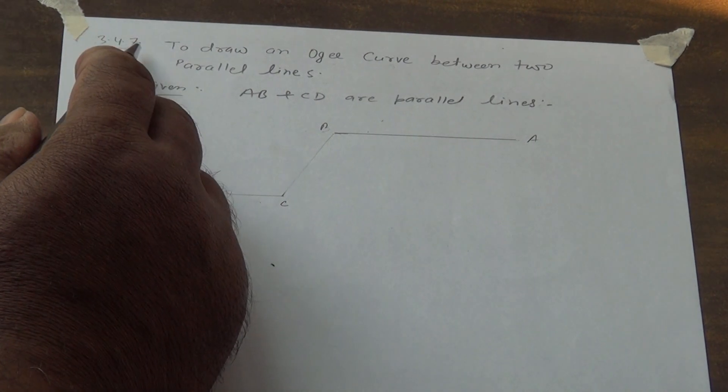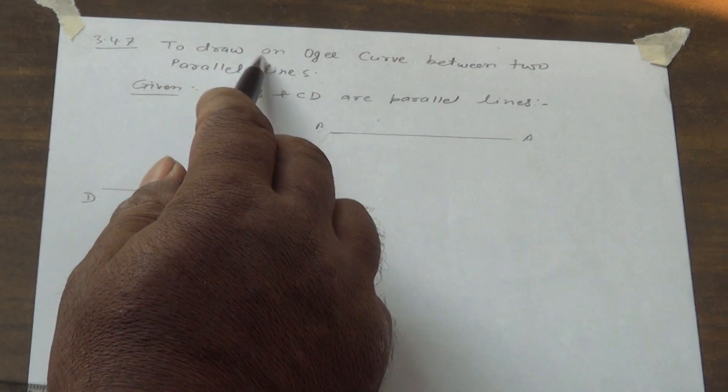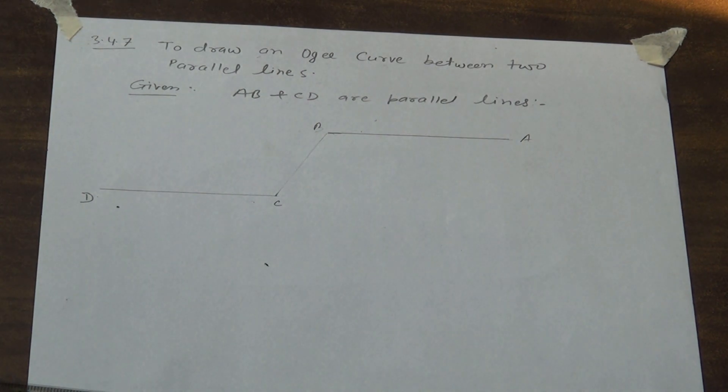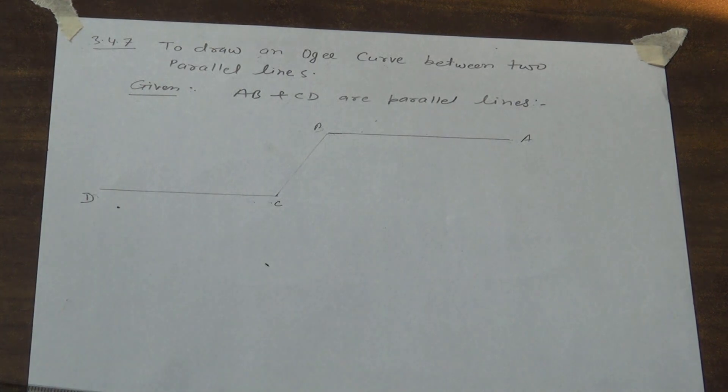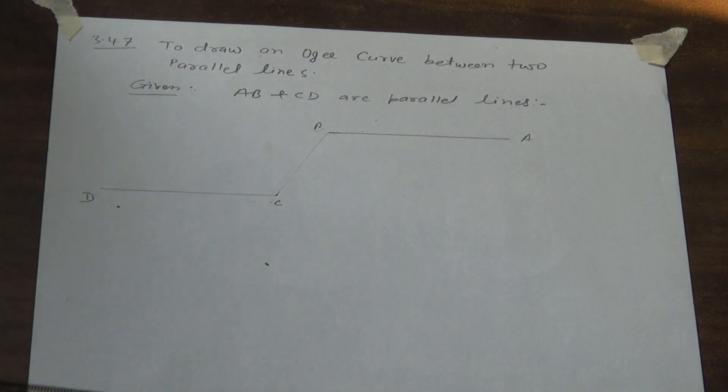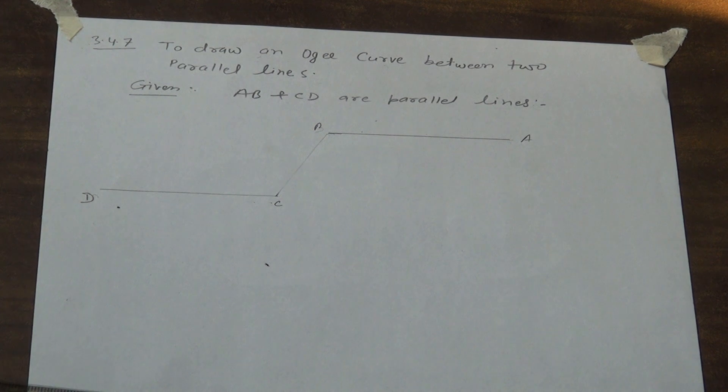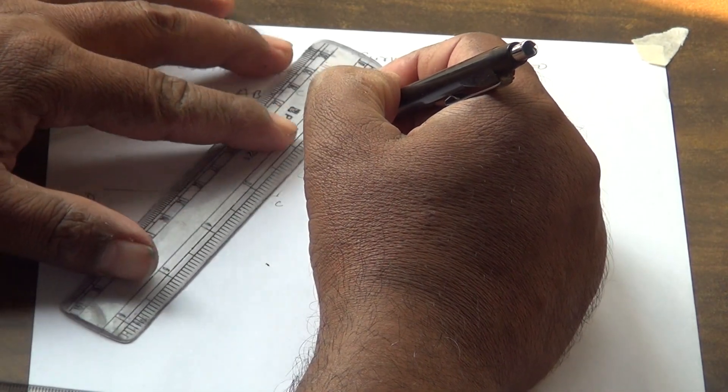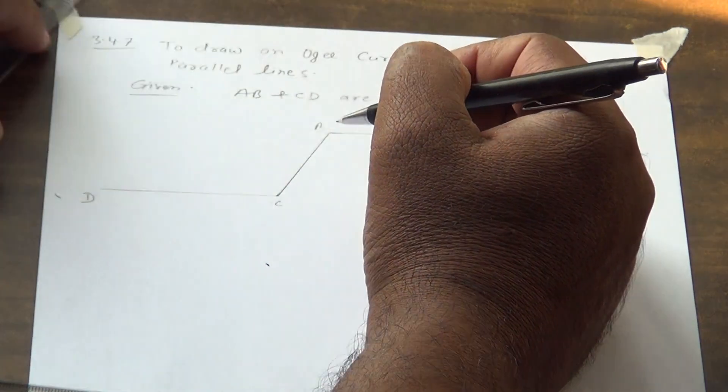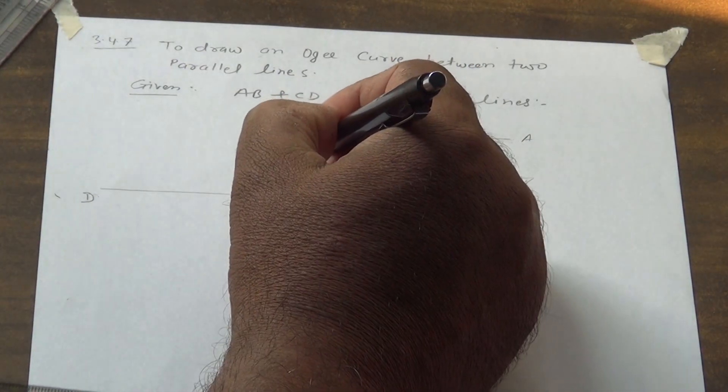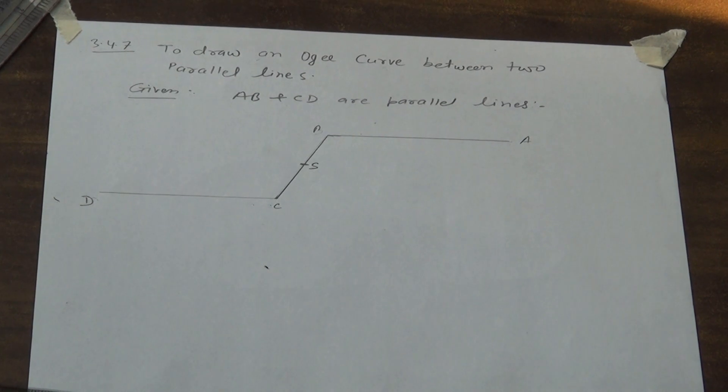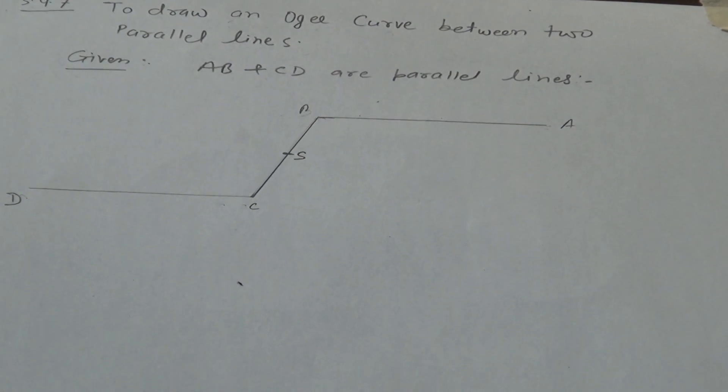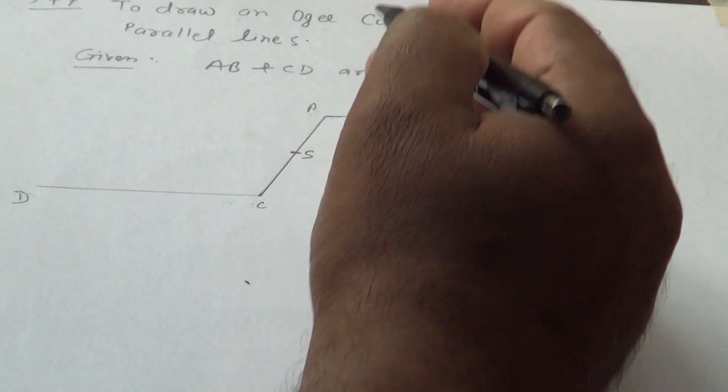3.4.7 to draw an ogive curve between two parallel lines. Given: AB and CD are parallel lines. AB and CD are parallel lines given. BC is a straight line.